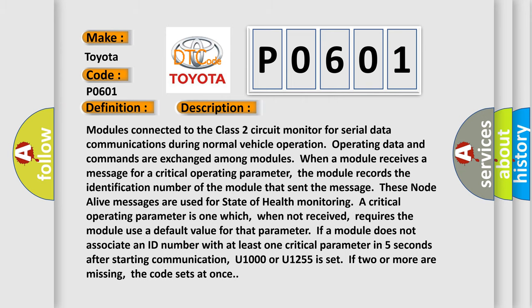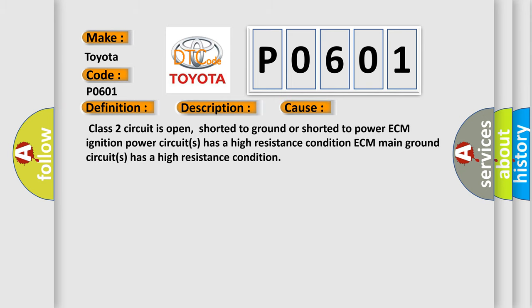This diagnostic error occurs most often in these cases: Class 2 circuit is open, shorted to ground, or shorted to power. ECM ignition power circuits has a high resistance condition. ECM main ground circuits has a high resistance condition.